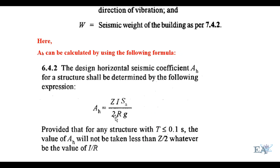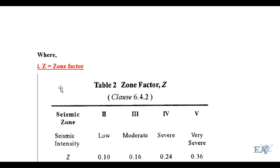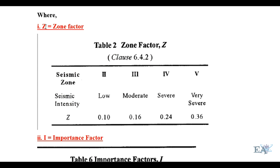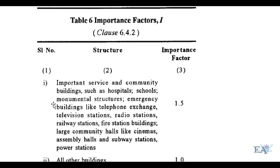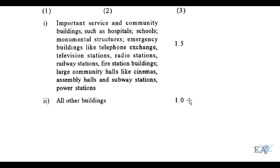AH, the design horizontal seismic coefficient, is calculated as: AH = (Z × I × SA/g) / (2 × R). Here Z is the zone factor, which depends on the seismic zone where the building is located. For example, if the building is in Zone 5, a very severe seismic condition, Z is taken as 0.36. I is the importance factor: if there is heavy movement of people, I = 1.5; for a normal residential building, I = 1.0.